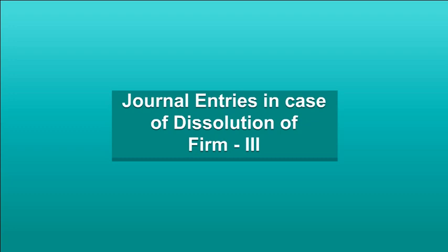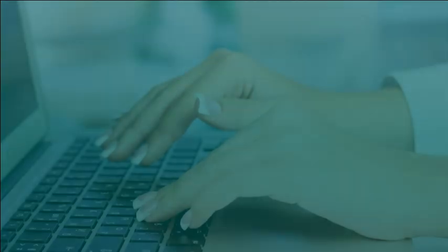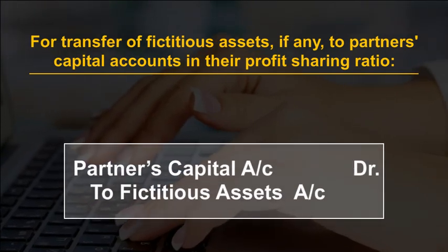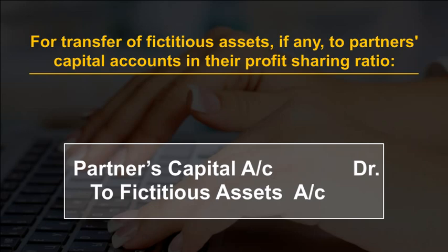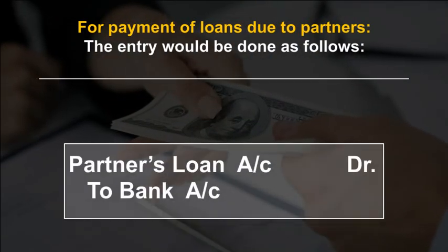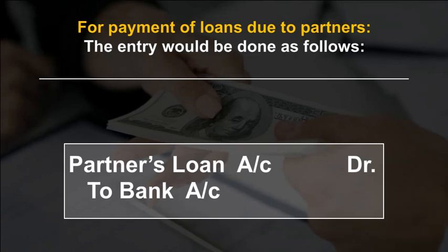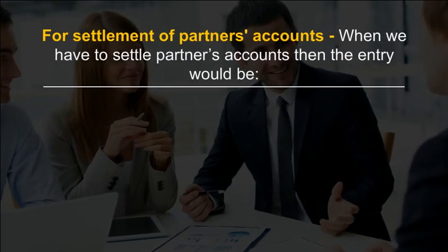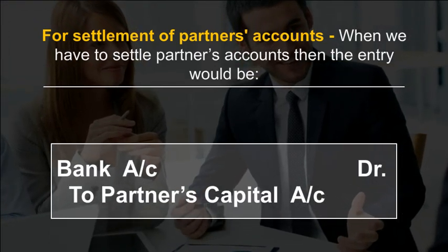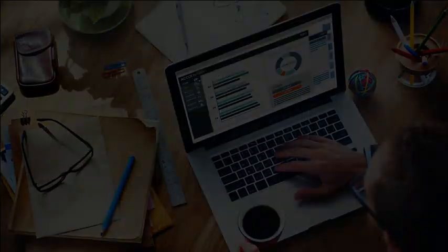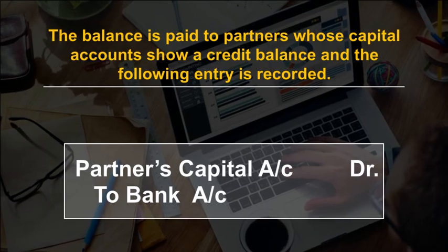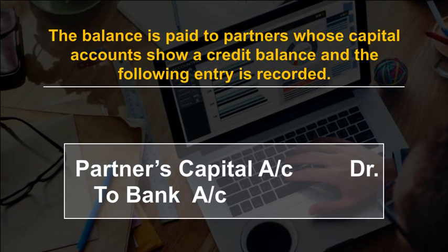For transfer of fictitious assets, if any, to partners' capital accounts in their profit sharing ratio, an entry will be recorded. For payment of loans due to partners, the entry would be done accordingly. For settlement of partners' accounts, when we have to settle partners' accounts, the entry would be recorded.